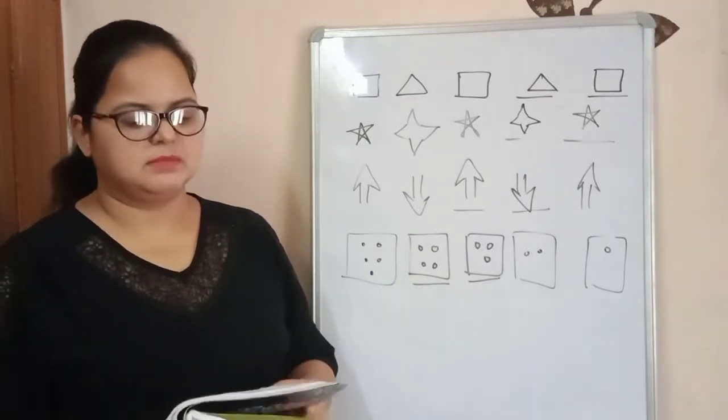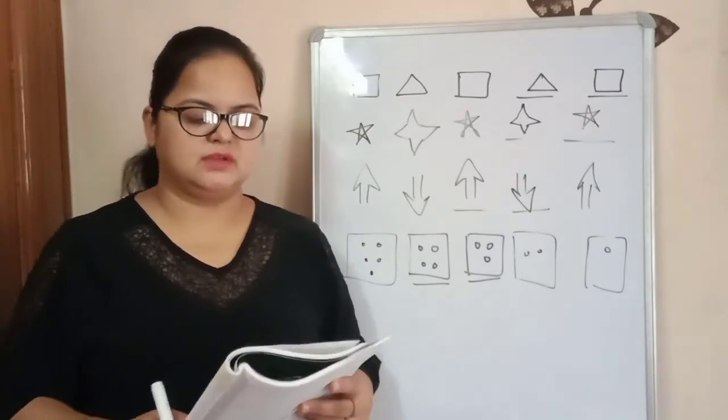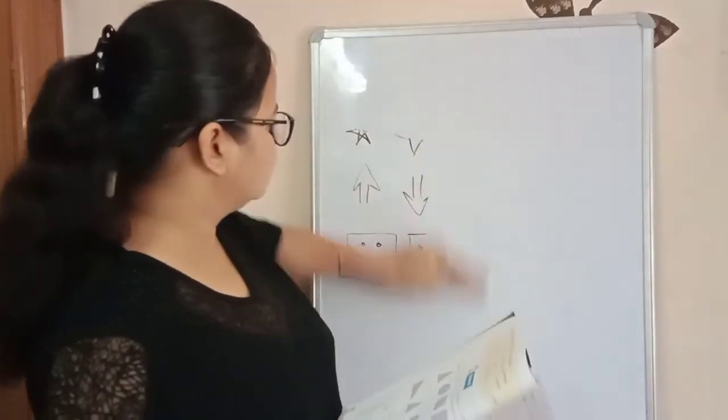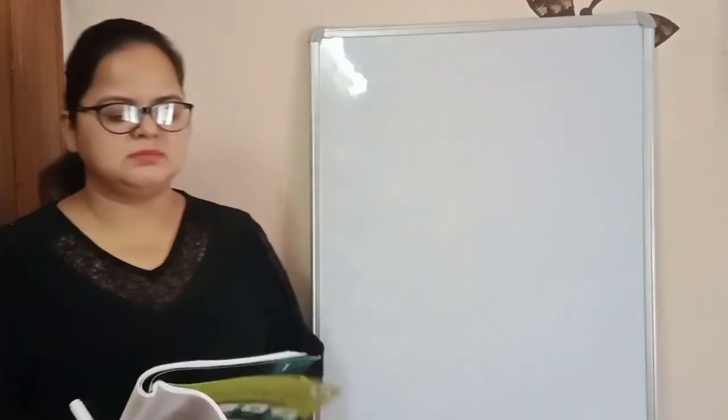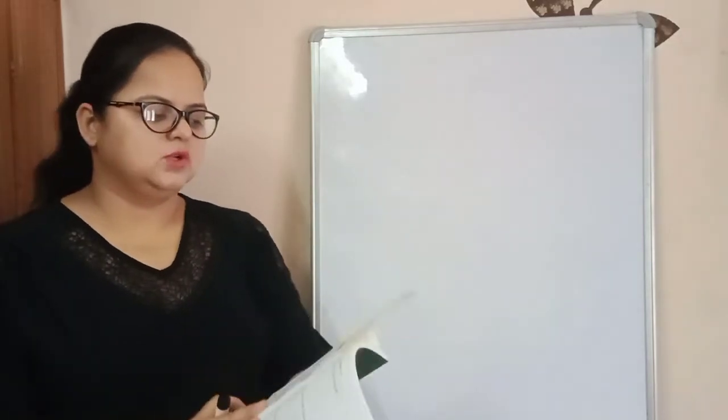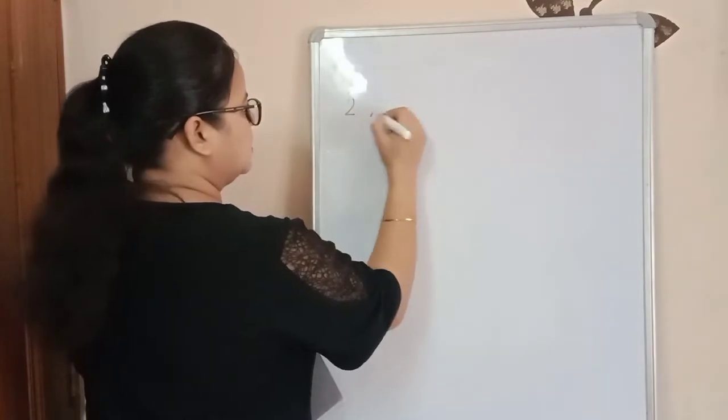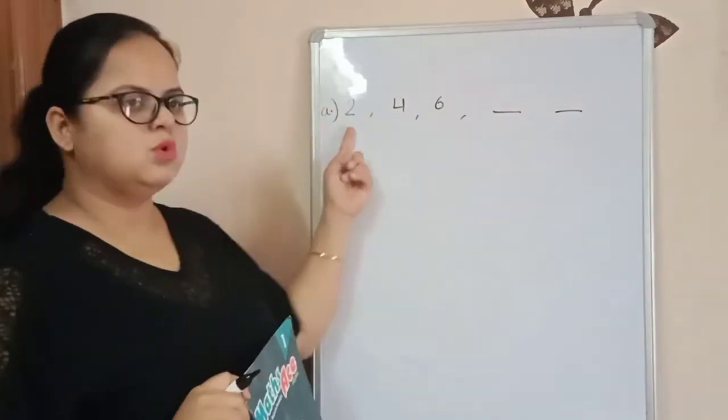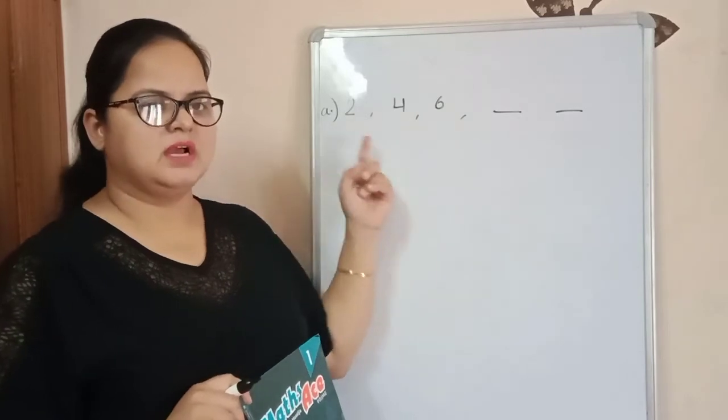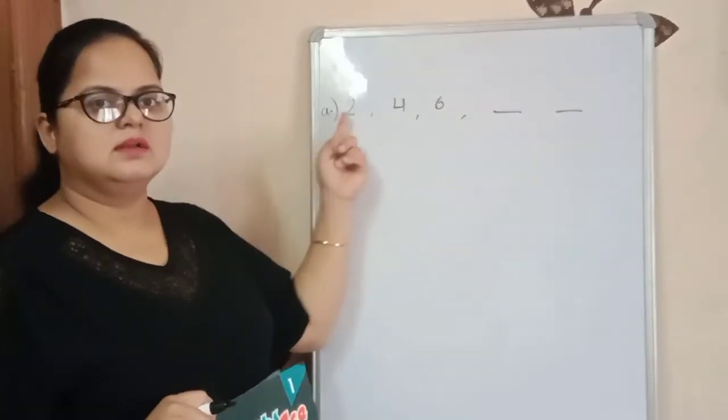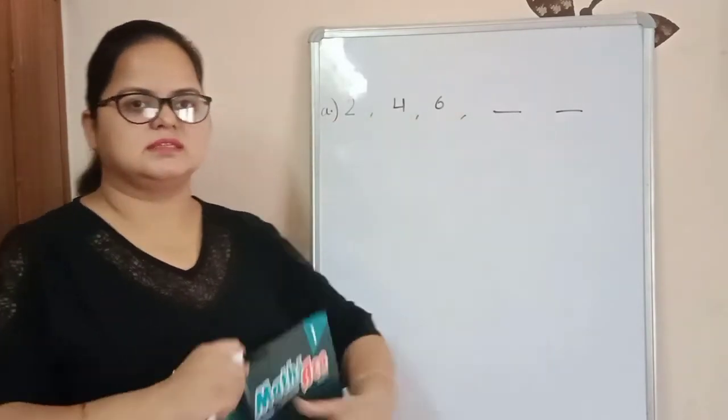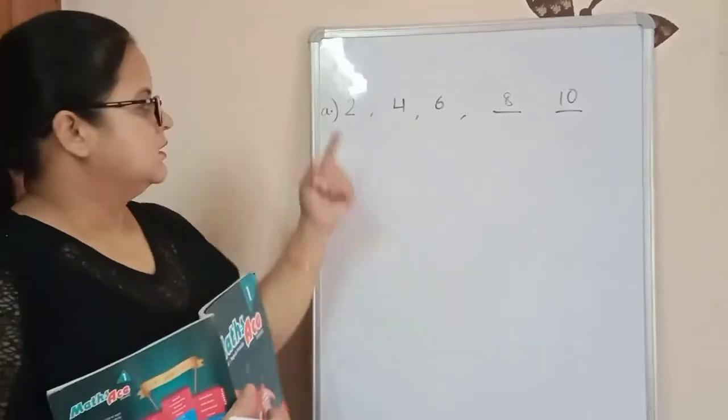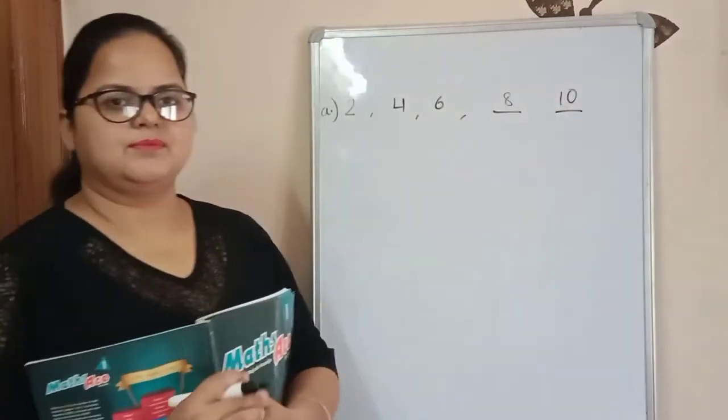Now open the next page, page number 60. Here is the third question given. Complete the following number and event pattern. So for the third sum, we have to fill the columns with following numbers or events. In the first, you can see number two, four, six, and two blanks are given here. Here we are skipping only one digit in between these. Two, skip three, then four, skip five, then six. Now we will skip seven and write eight here, skip nine and write ten. Two, four, six, eight, ten. Done. Very well done.